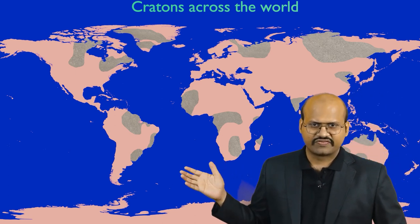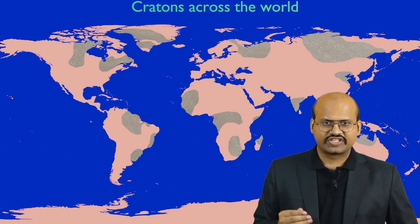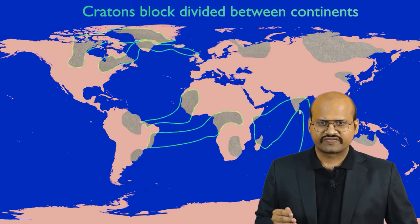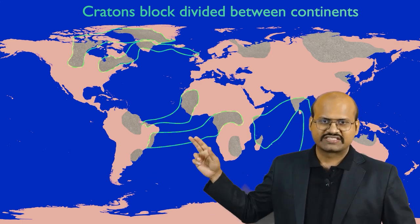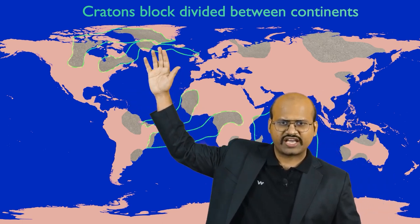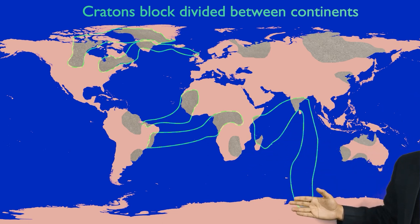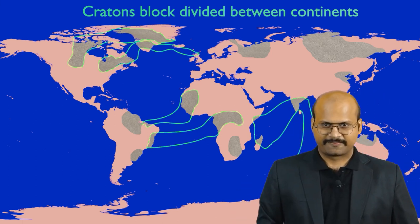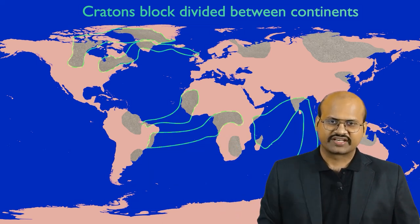In this image, we can see the distribution of Cratons across the continents. When study of these old rocks was done, it was found that some blocks of rocks across continents showed lots of similarities. The green line shows rocks across continents with similar characteristics. These Cratons, distributed across continents, seem to have come from one single block — they have the same characteristics and seem to have originated from the same time period. Therefore, this acts as evidence that they were formed from one single block.